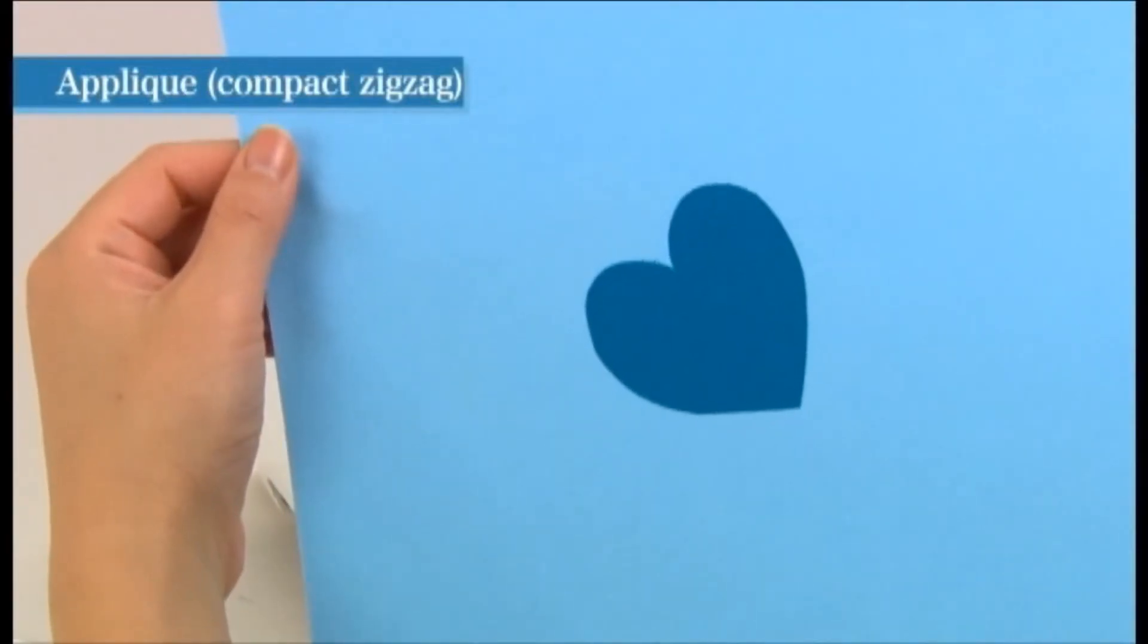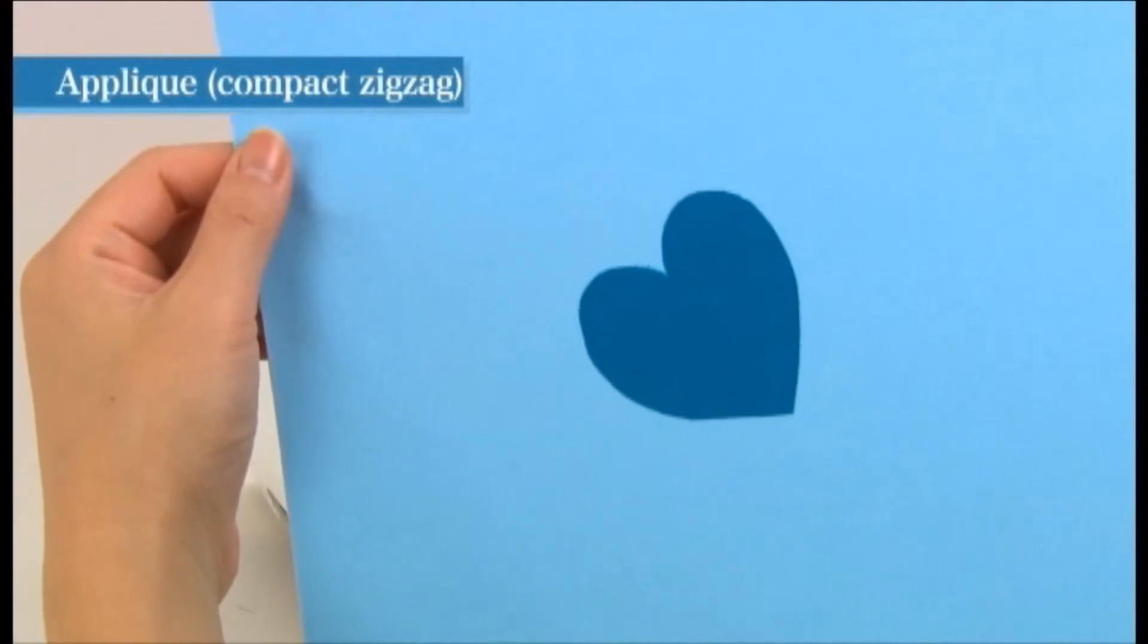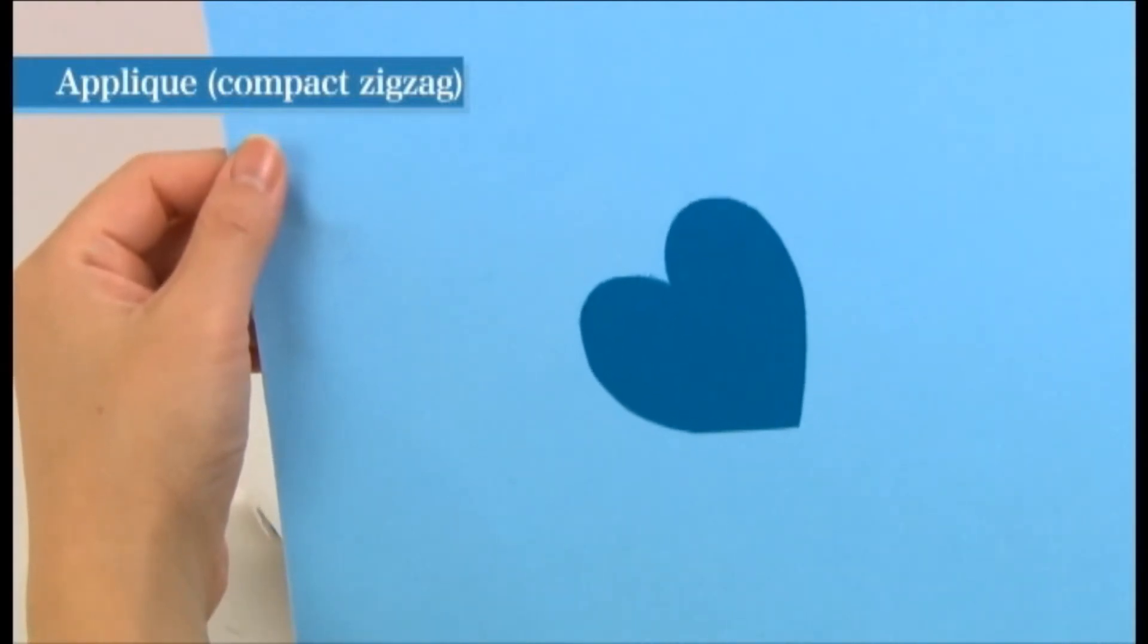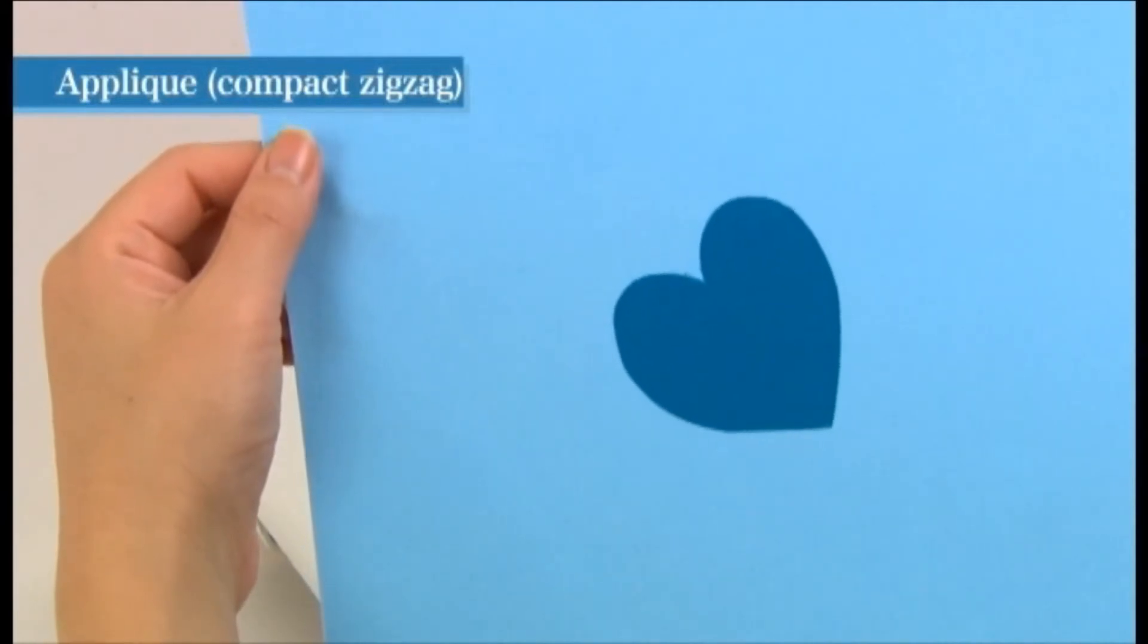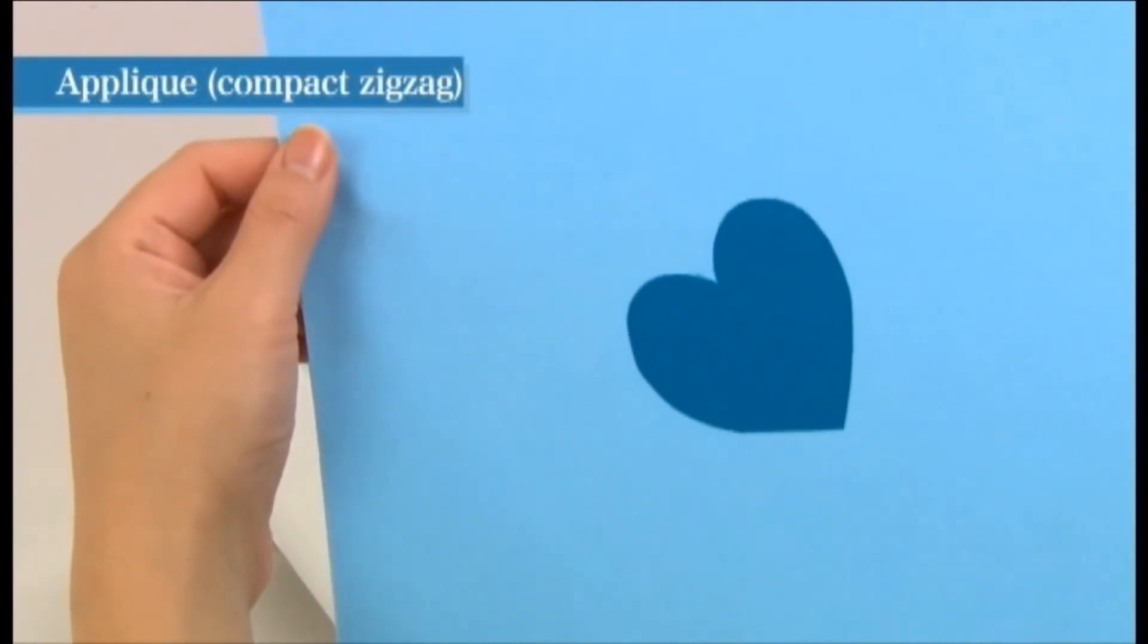Cut the applique fabric along the finishing lines and fix temporarily to the base fabric. Double sided fusible interlining is recommended for affixing the applique securely. Be sure to apply the interlining all the way to the edges of the applique.